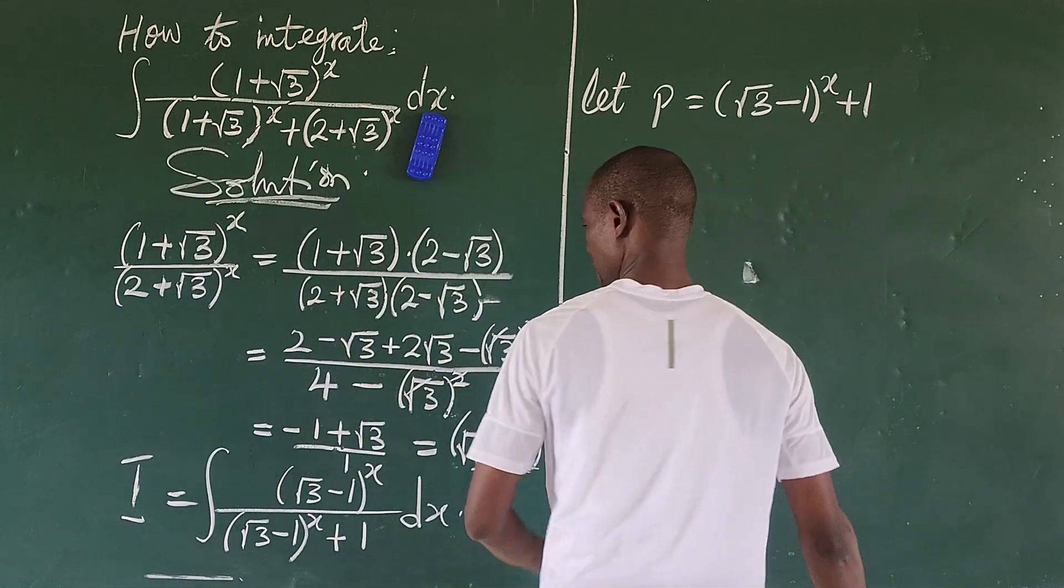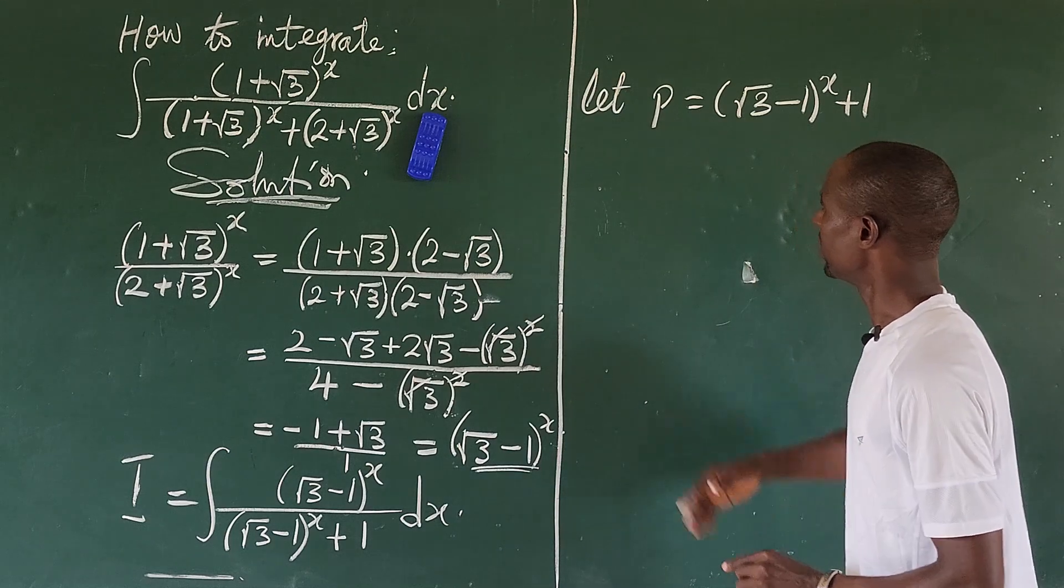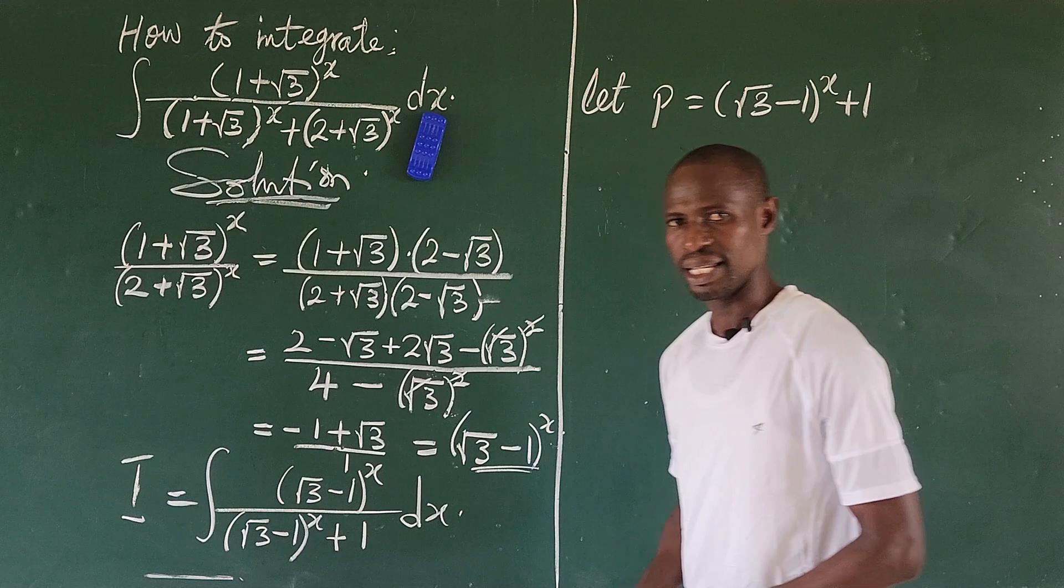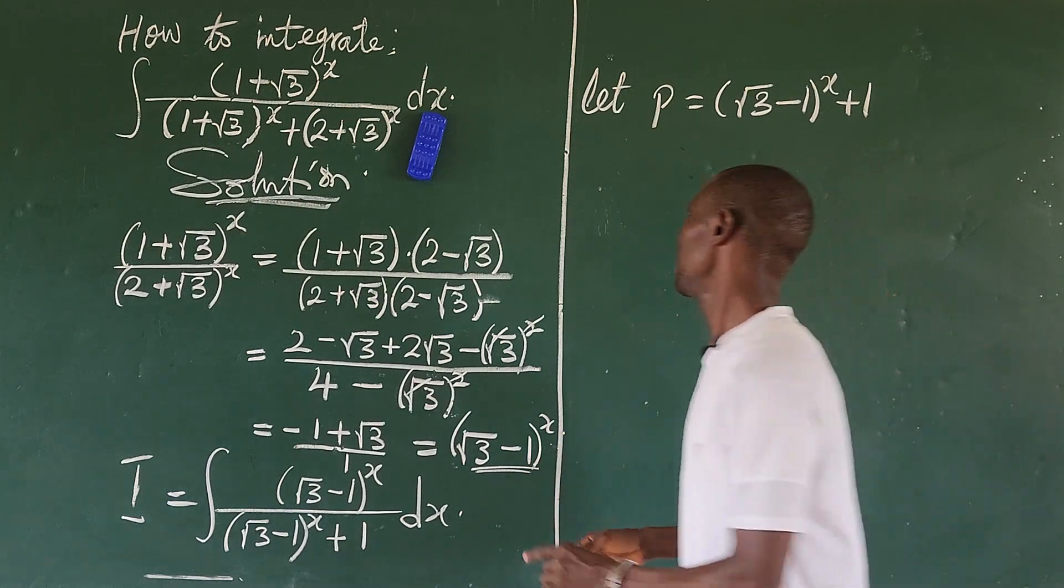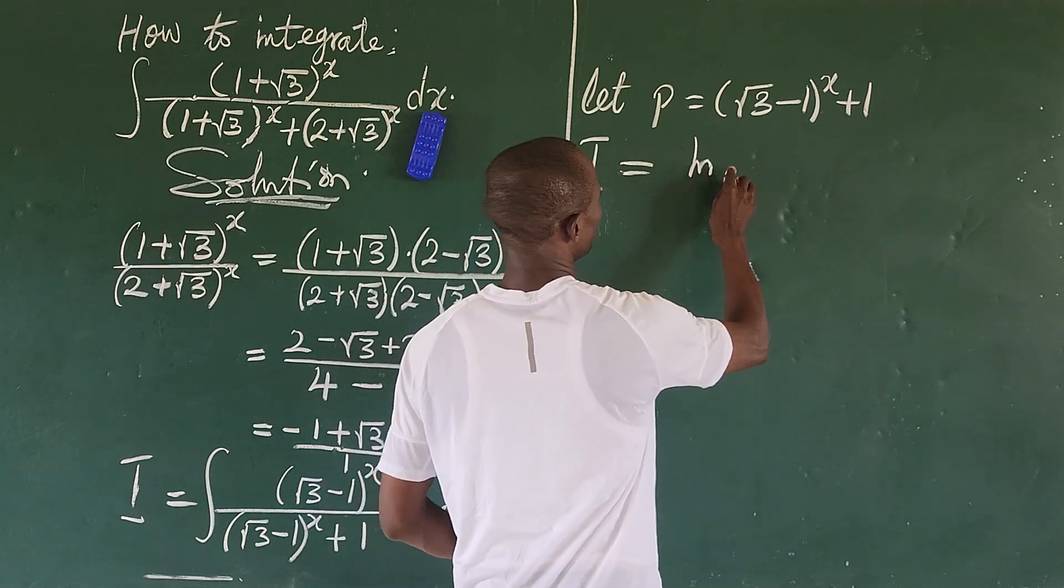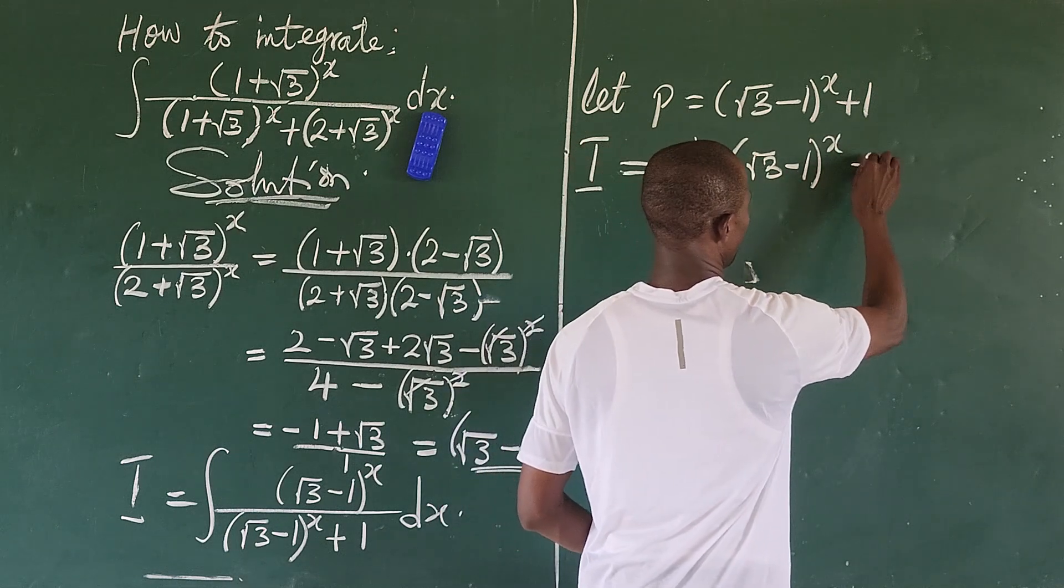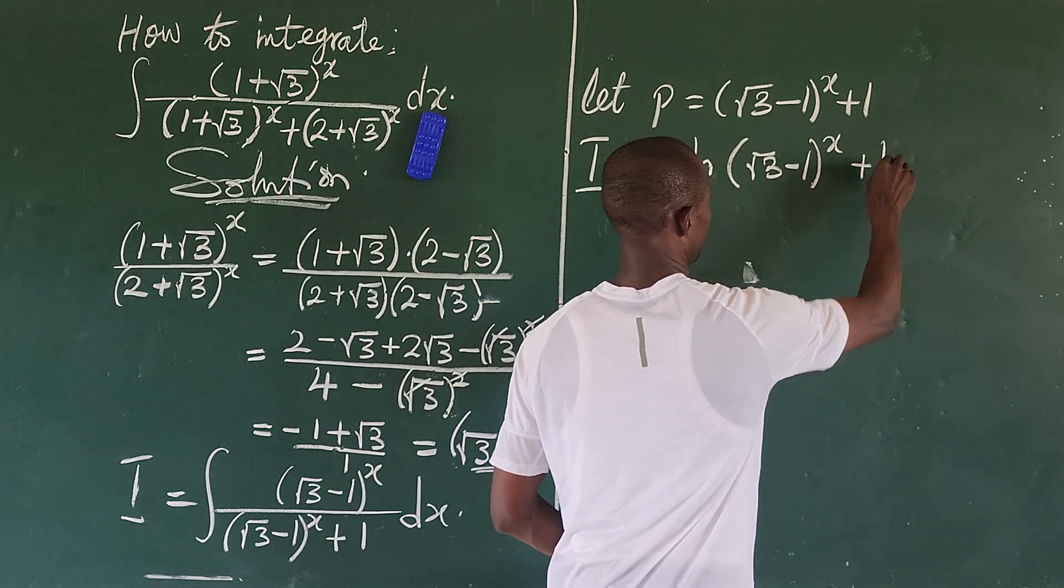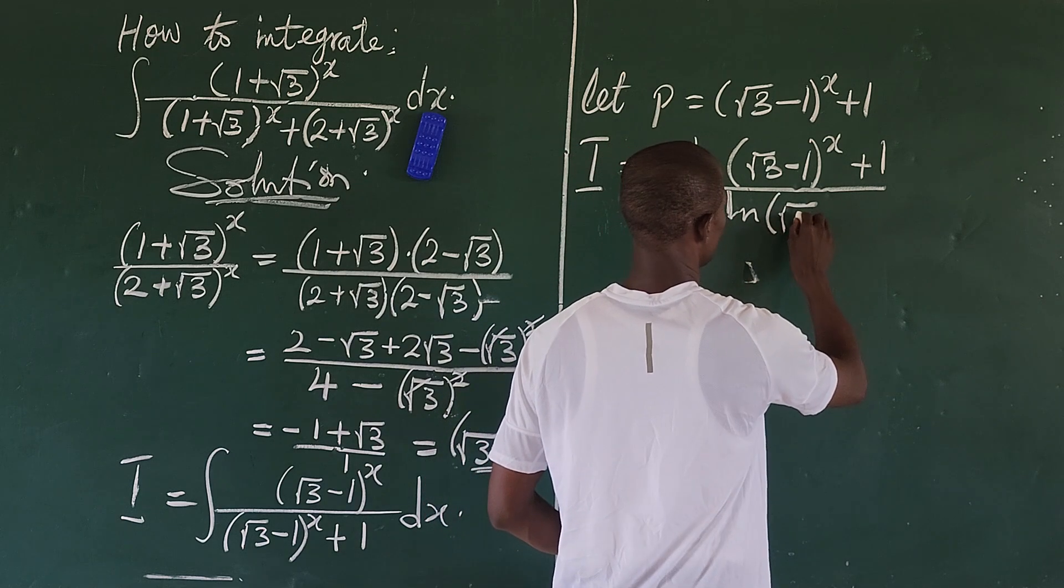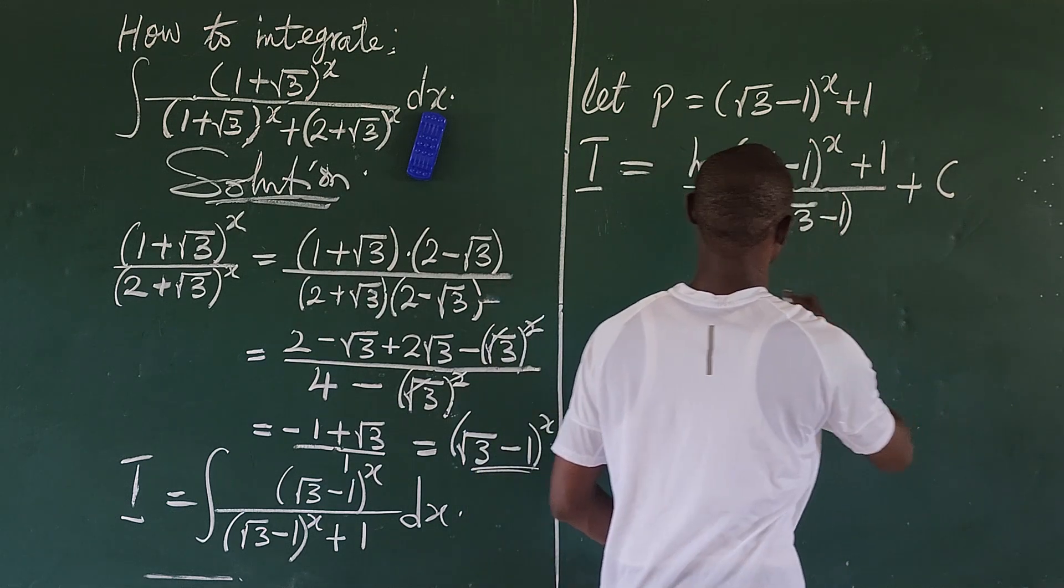So if we now put the whole of this into this system here and then we now find the dp/dx of this expression here, then put it into this, we can integrate our system. And if we do that, this will give us: I will now be equal to ln((√3 - 1)^x + 1) all over ln(√3 - 1) plus our constant.